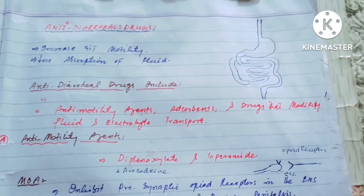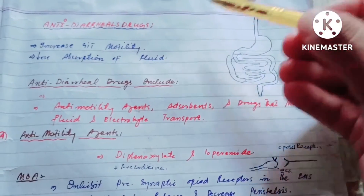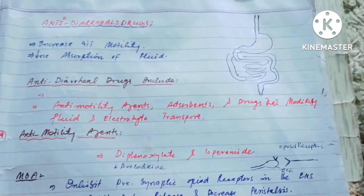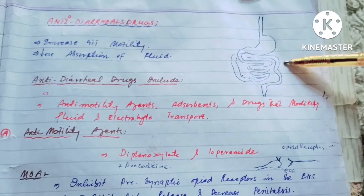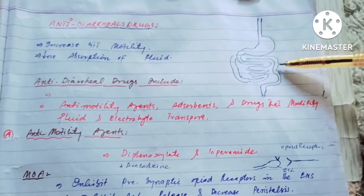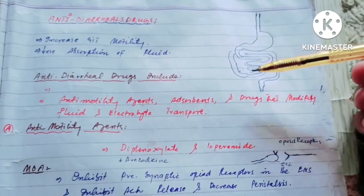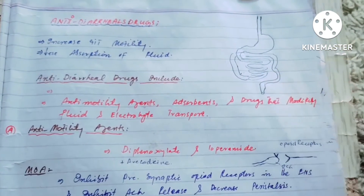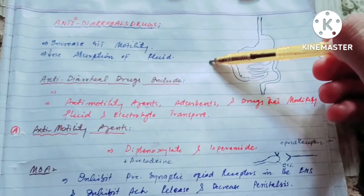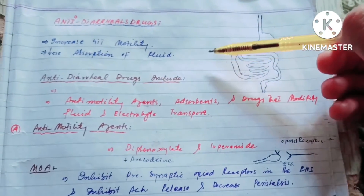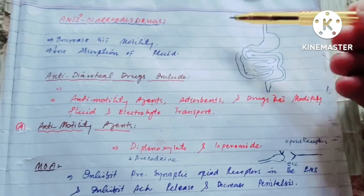Diarrhea occurs due to two things. One is increased motility of the GI tract — when the motility of the GI tract increases, there is not enough time for the GI tract to absorb fluid from the food, so a watery stool will occur. The second is decreased absorption of fluid — when fluid absorption through the GI tract decreases, watery stool is produced.